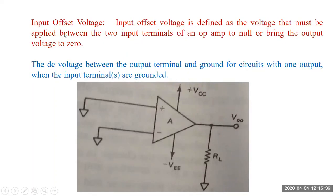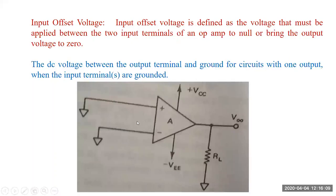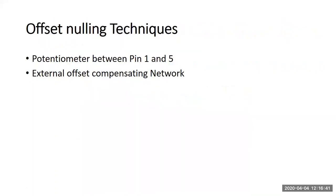The expected output is zero, but the output offset voltage VOO comes out as, say, 2 millivolts. This must be nullified. Input offset voltage is defined as the voltage that must be applied between the two input terminals of an op-amp to null or bring the output voltage to zero. So if there is 2 mV offset, you apply 2 mV at one terminal, making the difference zero. Predicting the polarity of the output offset — positive or negative — determines whether you add or subtract.